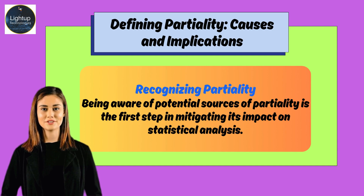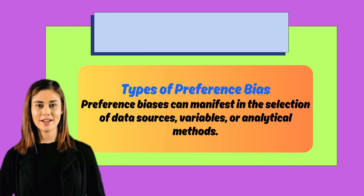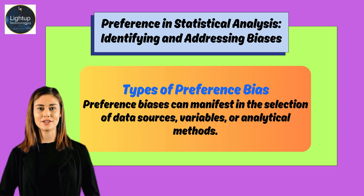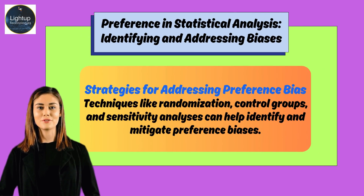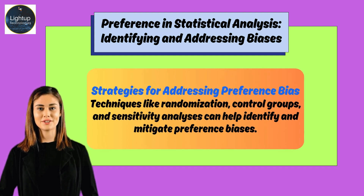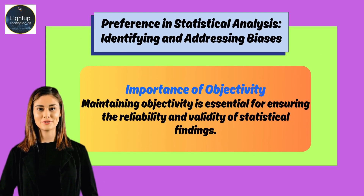Recognizing partiality and being aware of potential sources of bias is the first step in mitigating its impact on statistical analysis. Preference bias can manifest in the selection of data sources, variables, or analytical methods. Techniques like randomization, control groups, and sensitivity analysis can help identify and mitigate preference bias.